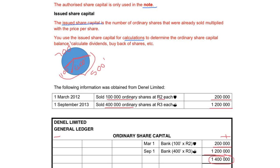Now, if you think of a sole trader and a partnership, you also had a capital account. In a company, we don't only call it capital because a company can have different types of shares that provide the capital of the business. They have ordinary shares, preference shares, cumulative preference shares, and redeemable preference shares. Because they sell different types of shares to obtain the capital of the business, they have to indicate which type of shares provided this 1.4 million.